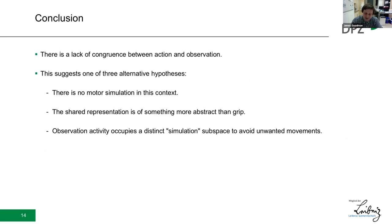In conclusion, we fail to see any indication of grip congruence between action and observation activity, whether we used a representational or a dynamical systems perspective. This would seem to argue for at least one of three possibilities. One where there is simply no motor simulation being recruited in this context. One where the shared representation of action concerns features that are more abstract than the specific grips. And one where there exists some distinct simulation subspace which avoids, for example, executing unwanted movements. And with that, I'd like to thank you for your time and invite you to ask any questions.